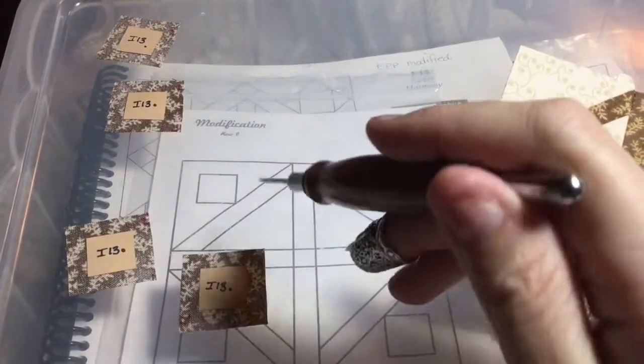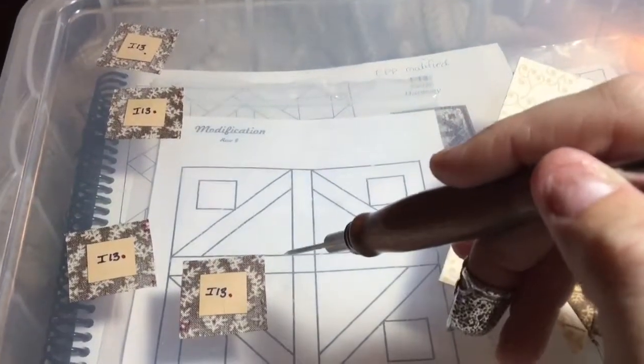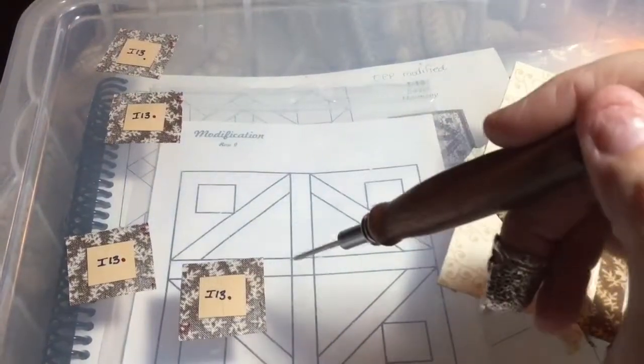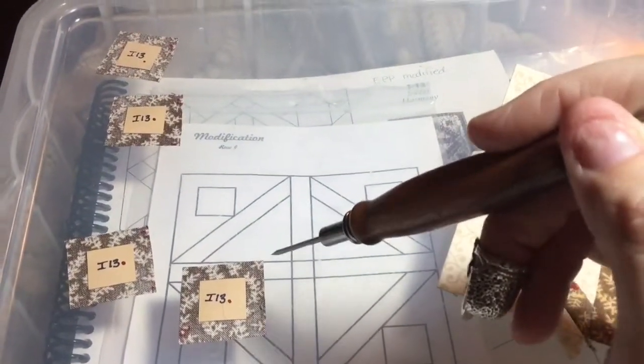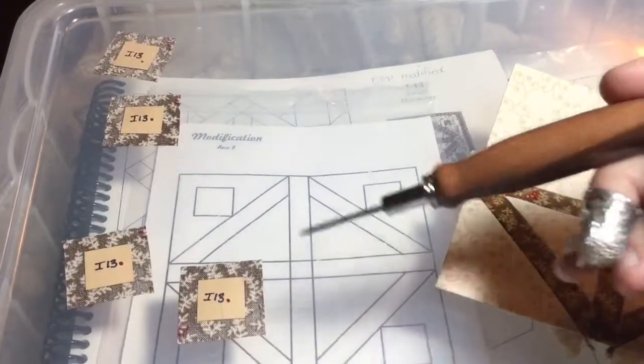So I'm going to baste these and then I'm going to find the midpoint of this by taking a ruler and lining it up from point to point here. And then I'm going to use my stapler and staple them down so I can appliqué them. So I've got my block prepped for appliqué.